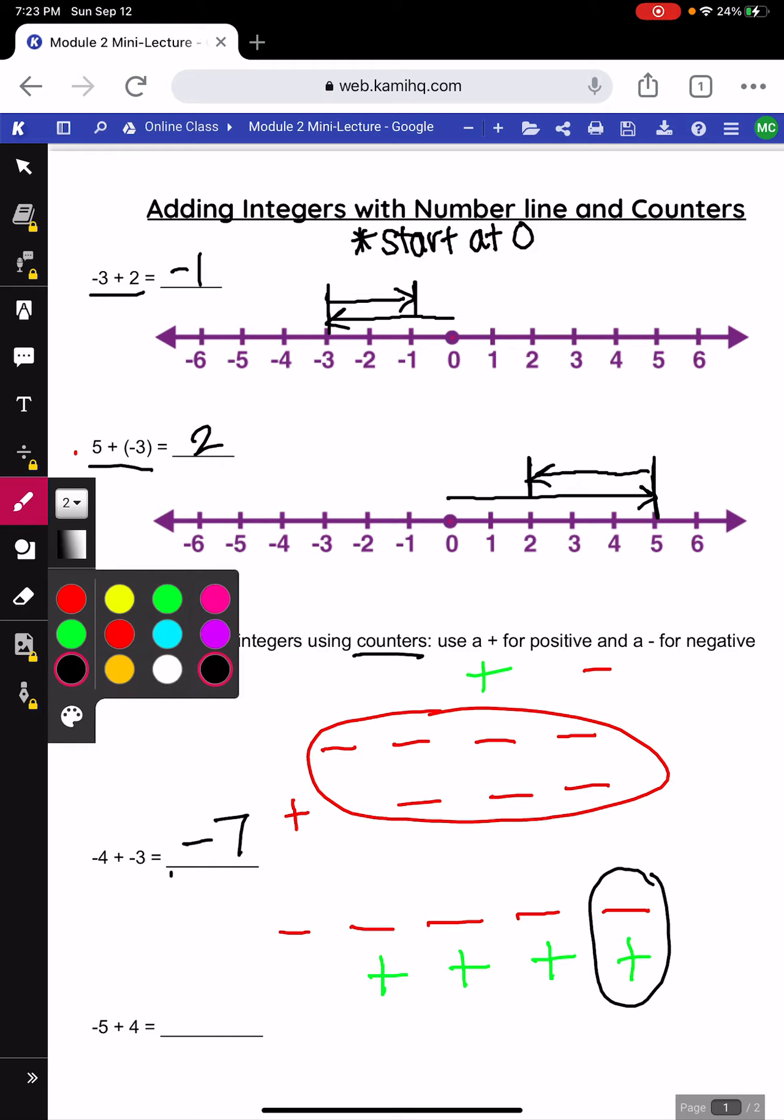The red represents a negative 1, green represents a positive 1. If I add negative 1 plus positive 1, I know that gets me 0, those will cancel out. We call those 0 pairs.